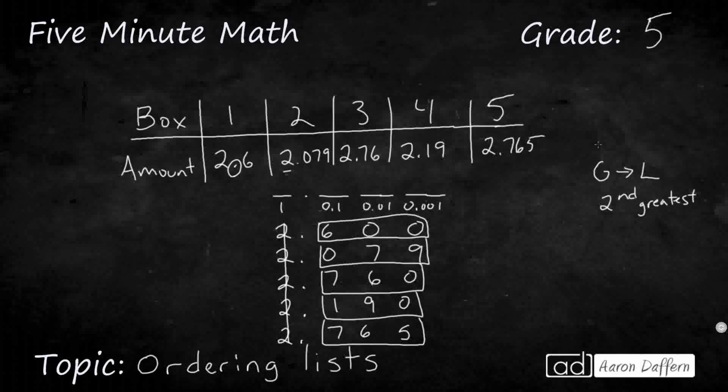So greatest to least, I need to look for my largest one. I've got a seven in the tenths place in two different spots, so I need to go to the hundredths place, six in both of those. So it's going to be this five. 765 is better than 760, so I'm going to write it right here. 2.765 thousandths, that's going to be first. Next is going to be 2.76 hundredths is next.